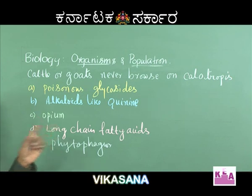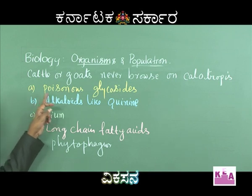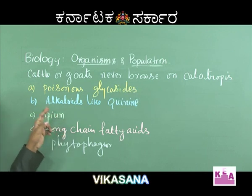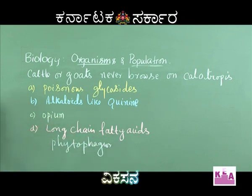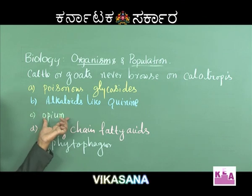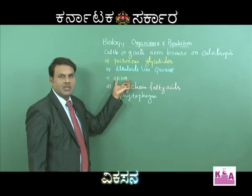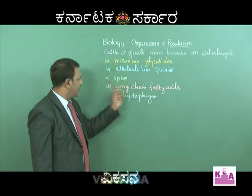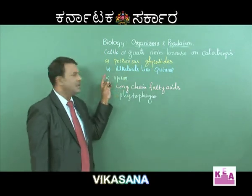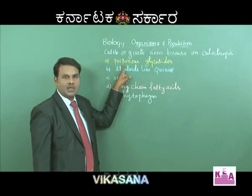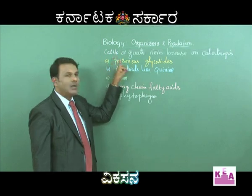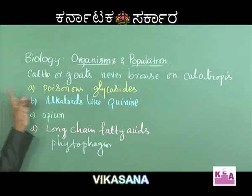Question: cattle or goats never browse on Calotropis. Options: A — poisonous glycosides; B — alkaloids like quinine; C — opium; D — long-chain fatty acids. Alkaloids cause sickness and indigestion in predators. However, Calotropis specifically produces poisonous glycosides (cardiac glycosides) to keep cattle and goats away. The correct option is A — poisonous glycosides.